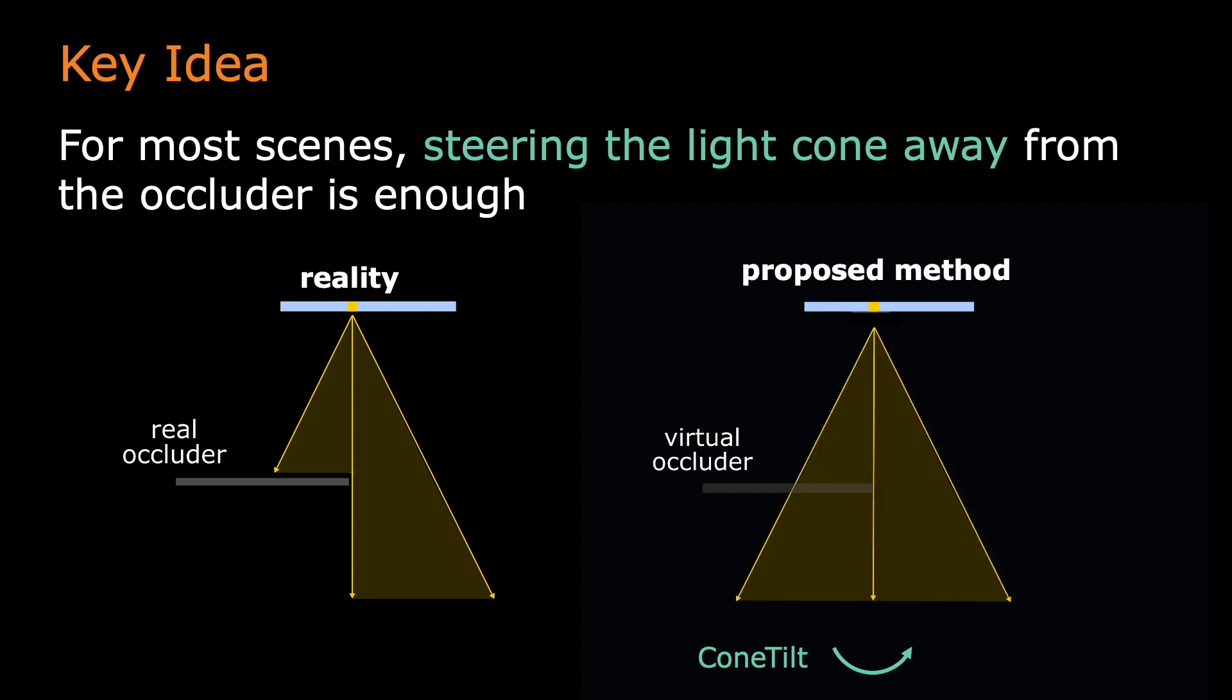Our key idea is that for most scenes, steering the light cone away from the occluder is enough to create the occlusion cue. In the example shown here, all we need is to turn the light cone by a small angle, such that no light rays pass through the virtual occluder. Since no light rays can be seen by our eyes through the occluder, we create an illusion that the virtual object can actually block light.